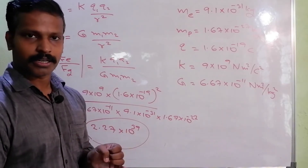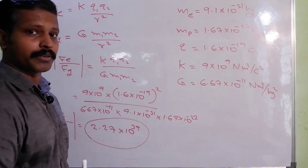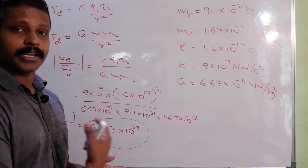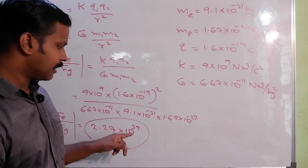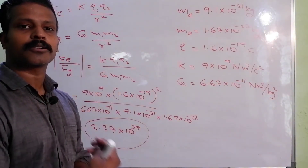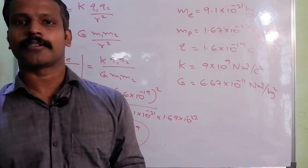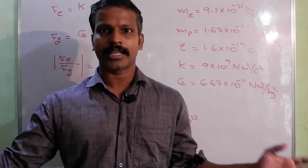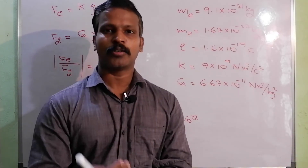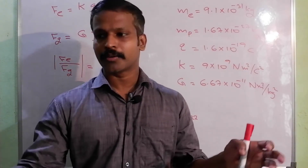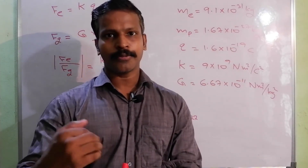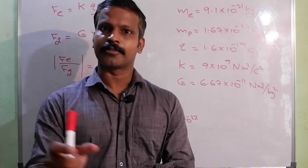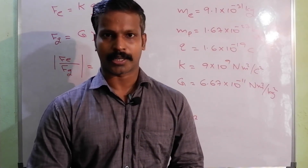We compare the two forces for electron and proton. The electrostatic force is very high — 10 raise to 39. The gravitational force, compared to the electrostatic force, is a very weak force. It is a long-range fundamental force, but among our 4 forces, gravitational force is the weakest force. Let's learn more about physics.